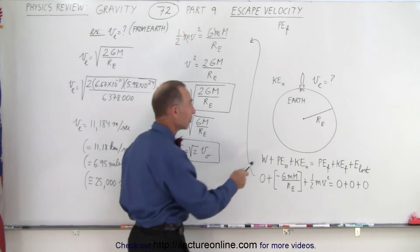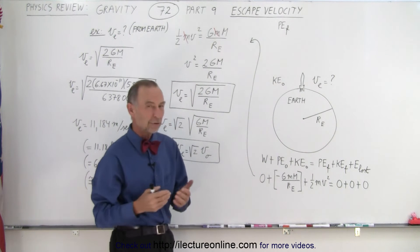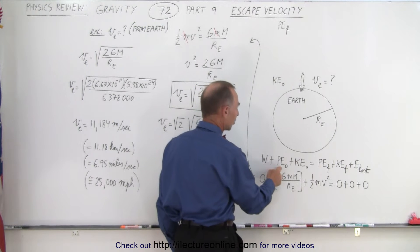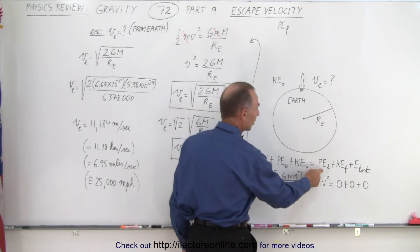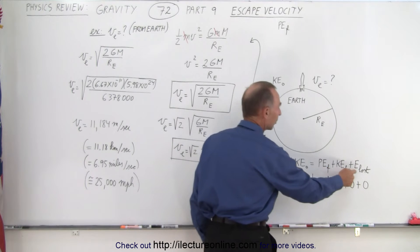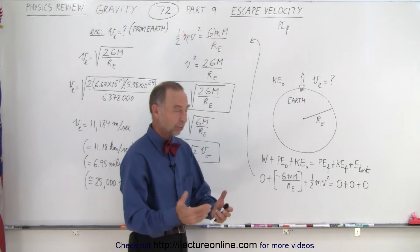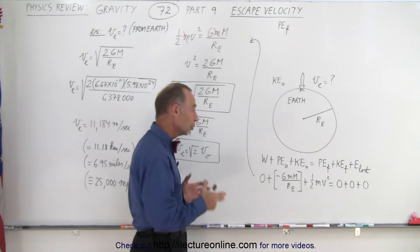So let's say you're trying to leave from the Earth and you want to know what the escape velocity should be. Well, if you use the energy conservation equation, any work put into the system plus the initial potential energy plus the initial kinetic energy should equal the final potential energy plus the final kinetic energy plus any energy you may have lost. Of course in space there's no friction